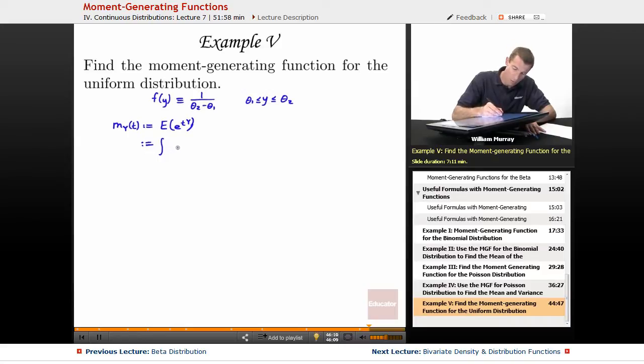It's the integral of the density function, f of y times whatever function you're trying to find the expected value of, in this case e to the ty, dy. And then you integrate that over your whole range for y, which in this case is theta 1 to theta 2. So now we just have to do some calculus.